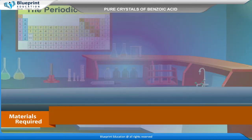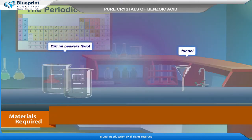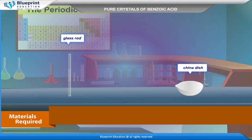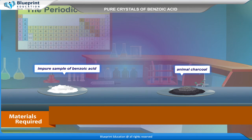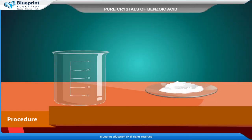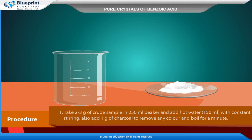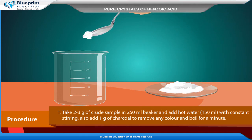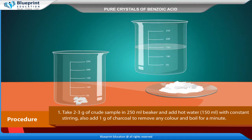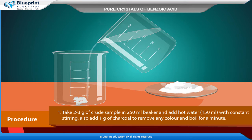The materials required are two 250 ml beakers, funnel, glass rod, china dish, a crude sample of benzoic acid, and animal charcoal.